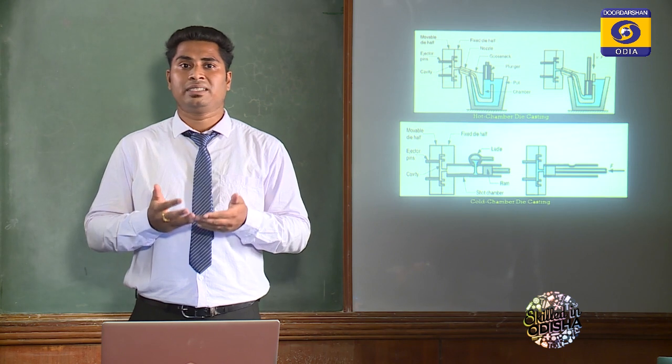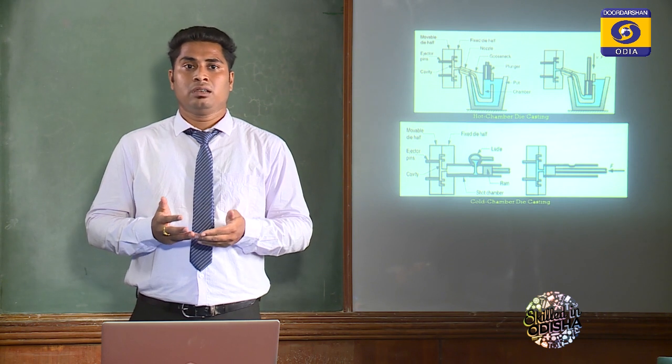Summarizing both processes: In Hot Chamber Die Casting, it is used for low melting point metals and alloys; in Cold Chamber it is used for high melting point metals. Hot Chamber requires lower pressure because the molten metal temperature is higher; Cold Chamber requires higher pressure because the temperature is lower. In Hot Chamber the melting basin is integral to the machine; in Cold Chamber it is not, so an external ladle is used.